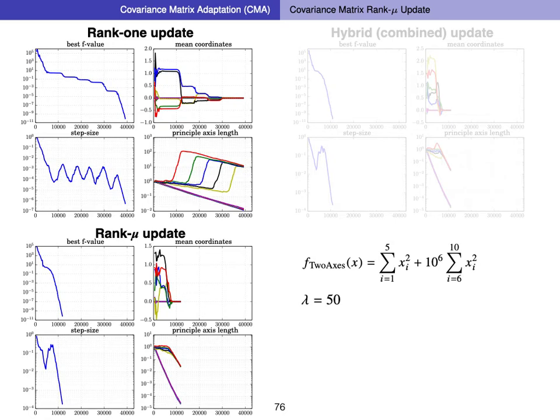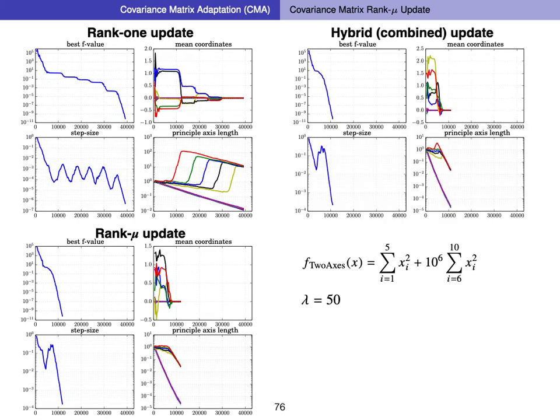With population size lambda equals 50 instead of 10 (simulations in 10D): rank-1 update alone takes about 40,000 evaluations — about 3 times slower than with lambda=10. However, the rank-mu update still takes about 12,000 evaluations, showing it exploits information from the entire population better than rank-1 update. Combining rank-1 and rank-mu update with population size 50 gives basically the same performance as rank-1 update with small population — which was the much better performance in this case.